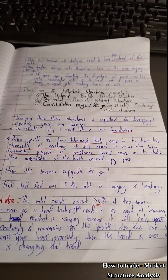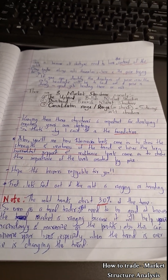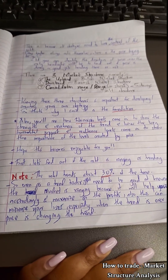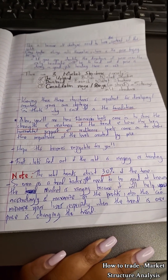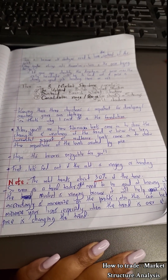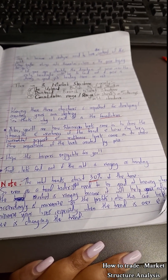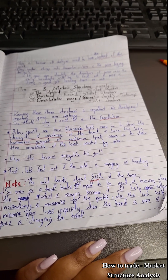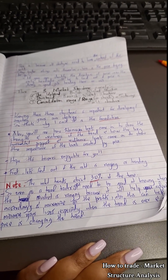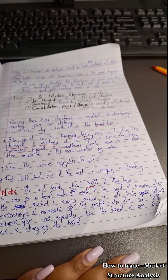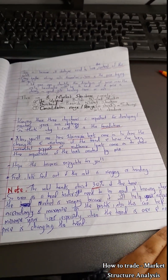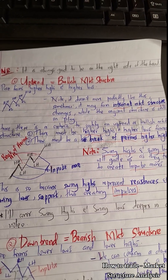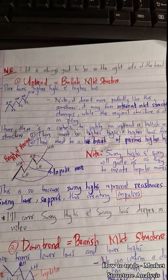First, let's find out if the market is ranging or trending. Note that the market trends about 30 percent of the time, so even as a trend trader you need to be good at knowing when the market is ranging. This helps you adjust accordingly, maximize profits, and minimize losses — especially when the trend is over and price is changing direction again.